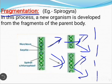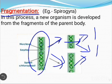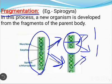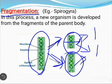Simply, in fragmentation, adult organisms break into two or more pieces and form new individuals called fragments. This is the adult organism which is fragmented into two or more fragments and forms new individuals. The best example is Spirogyra — it is an algae.